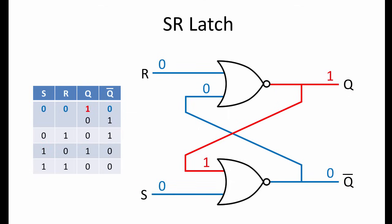The set pulse is removed. S is 0, and R is 0. Output Q is still 1, and not Q is, of course, 0.